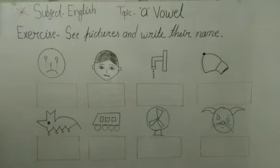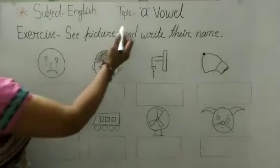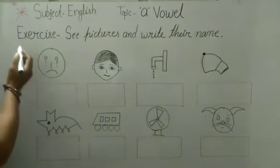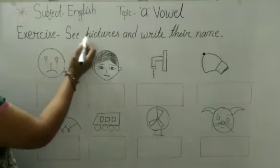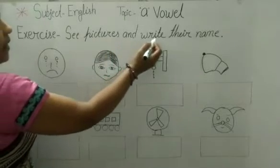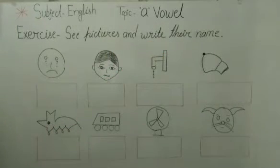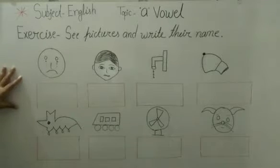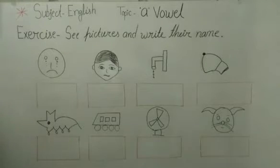Hello children, let's do some exercise in English. Today's topic is involving. And exercise: see the pictures and write their name. Bacho, amayin pictures ko dekhna hai, phir unke naam likhna hai. So let's start.